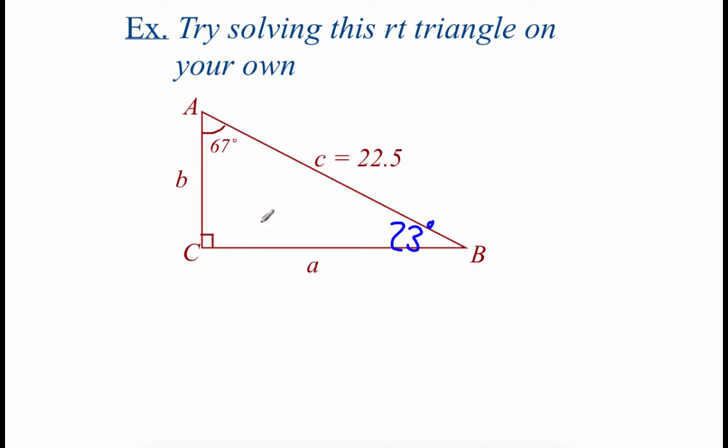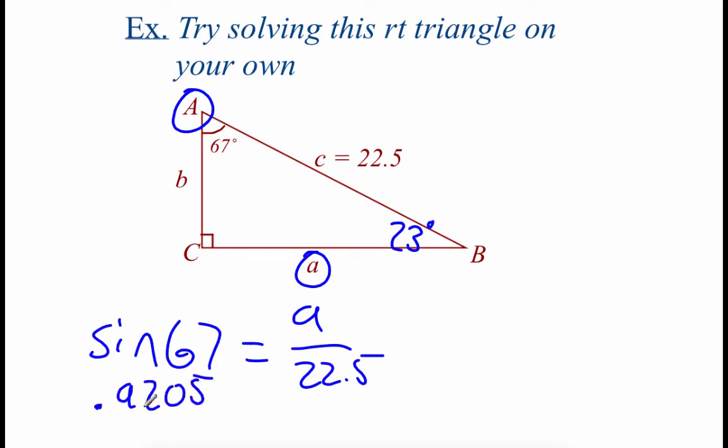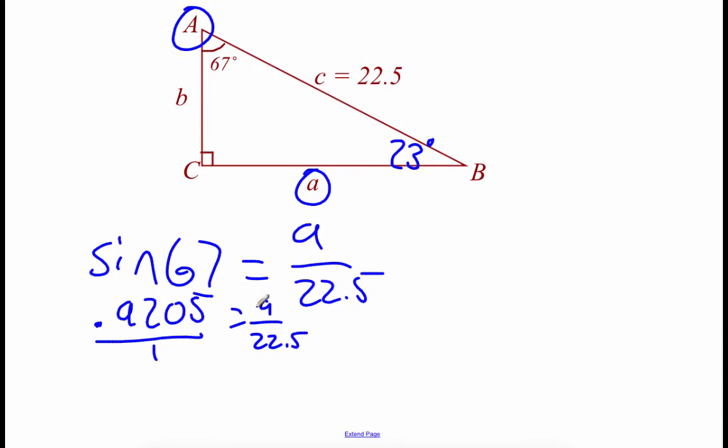Now, I'm just going to start finding some of the other sides. So maybe we start with angle A up here, and maybe we want to find side A. So those A's are opposite, so I'm going to go sine of 67 equals our opposite side A over 22.5. I'm punching that left-hand side into my calculator, and when we do the sine of 67 to four decimals, I've got 0.9205 equals our A over 22.5. I'm going to make this a fraction on the left-hand side so I can do a little bit of cross-multiplying. 1 times A is A, and if we take 0.9205 times 22.5 we should get about 20.7 if we go to one decimal.